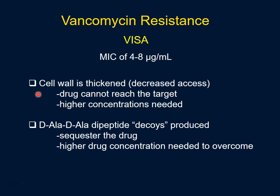Some VISA strains do something additional: they synthesize decoy D-alanine D-alanine dipeptides — free dipeptides not part of the pentapeptide — which are released to sequester and quench the vancomycin drug wherever it is. This requires even higher drug concentrations to overcome the decoys being produced by the bacteria. These are the mechanisms underlying VISA-type resistance in Staphylococcus aureus.